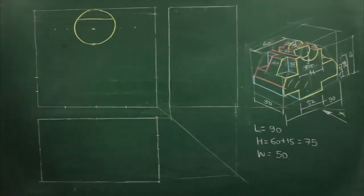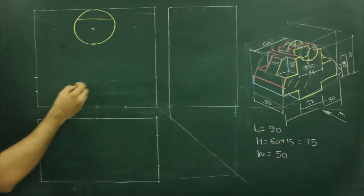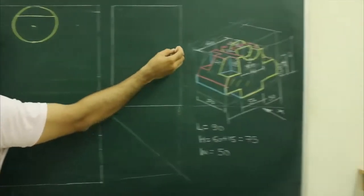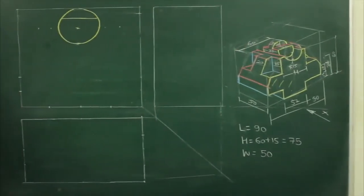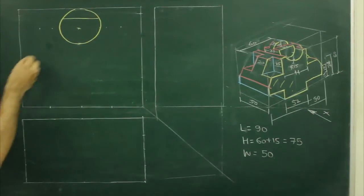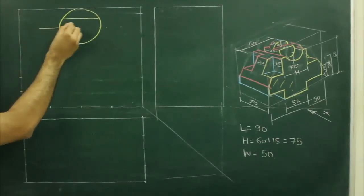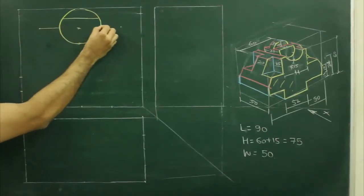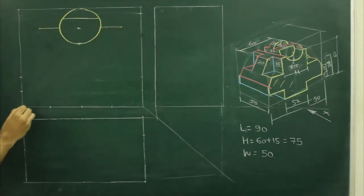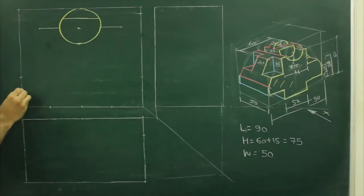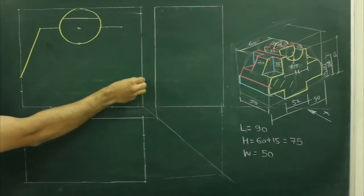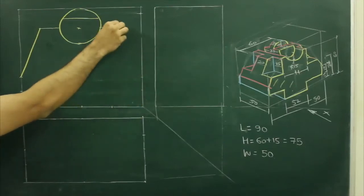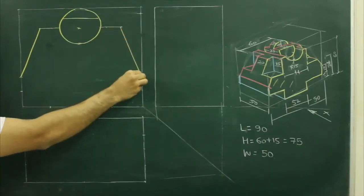Then the given dimension is 60. So what we need to do from center, we need to take 30 on both the sides. And take 12 plus 10 from here and join this. Same way 12 plus 10 from here and join this.